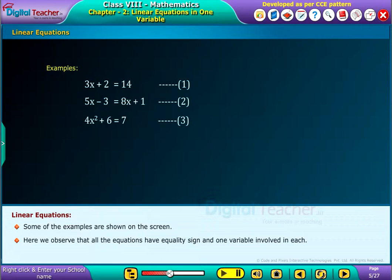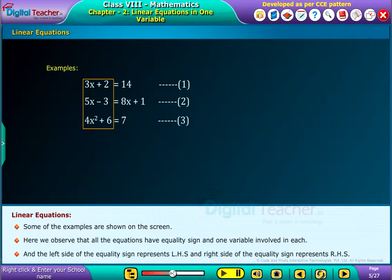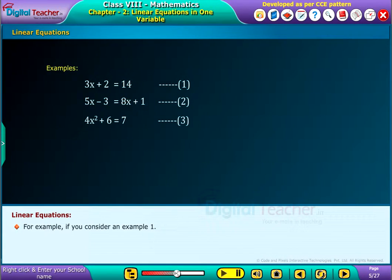Some of the examples are shown on the screen. Here we observe that all the equations have equality sign and one variable involved in each, and the left side of the equality sign represents LHS and right side of the equality sign represents RHS.